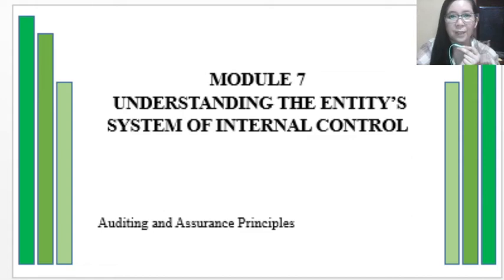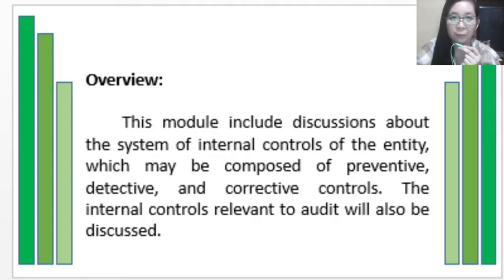For this next video lecture, this is all about Module 7: Understanding the Entity's System of Internal Control. The overview of this module will include discussions about the system of internal controls of the entity, which may be composed of preventive, detective, and corrective controls, as well as the internal controls that are relevant to the audit.